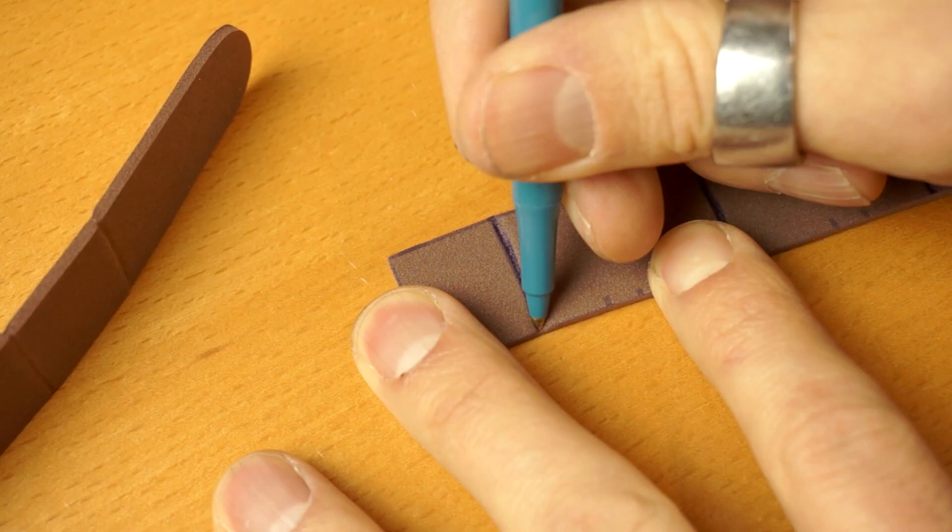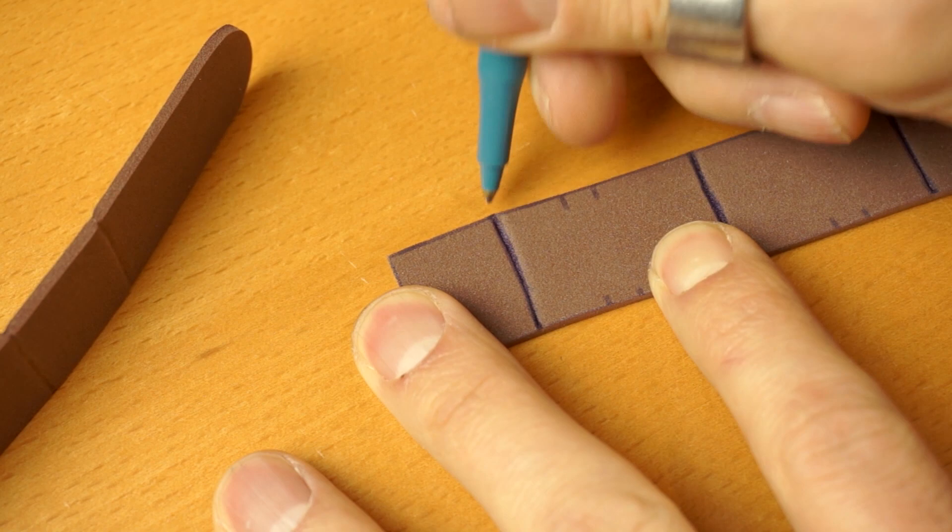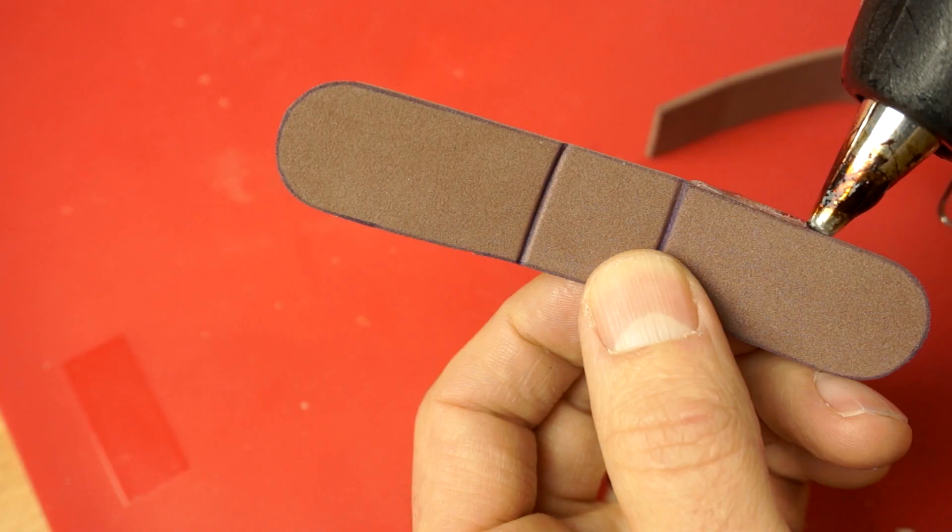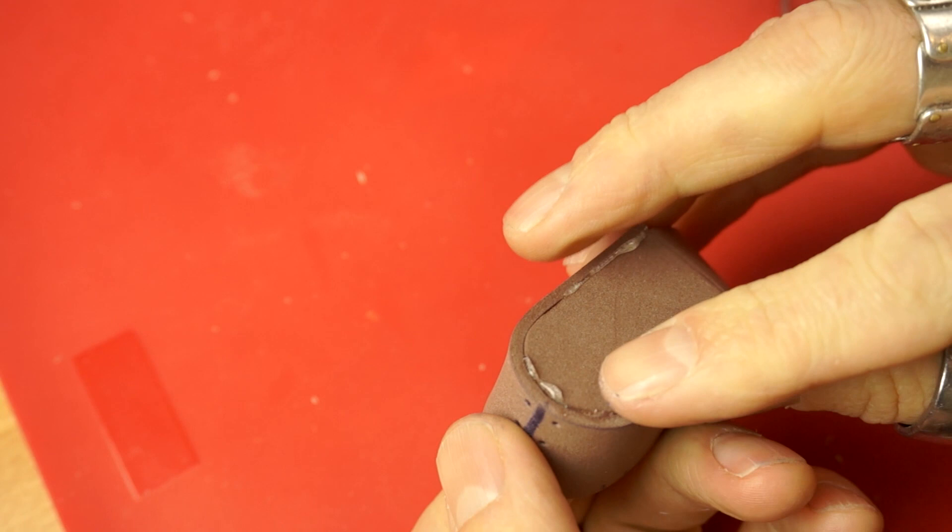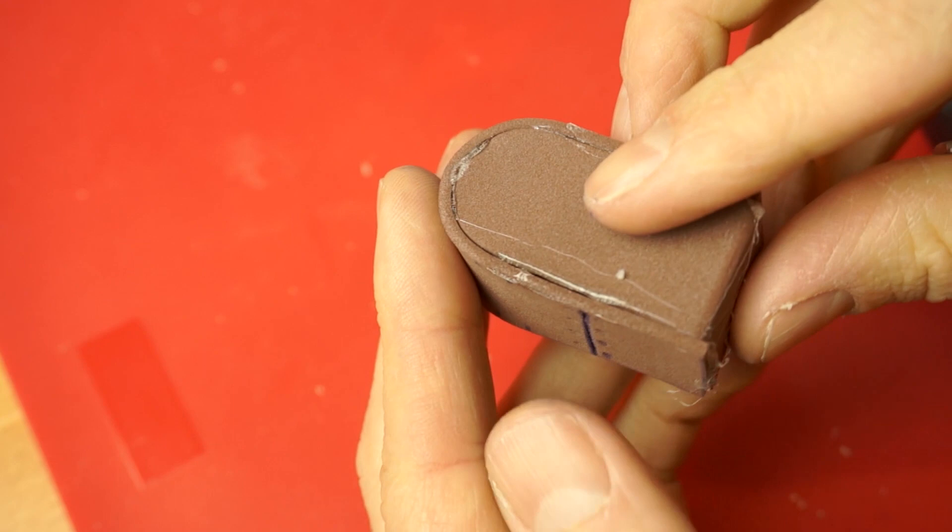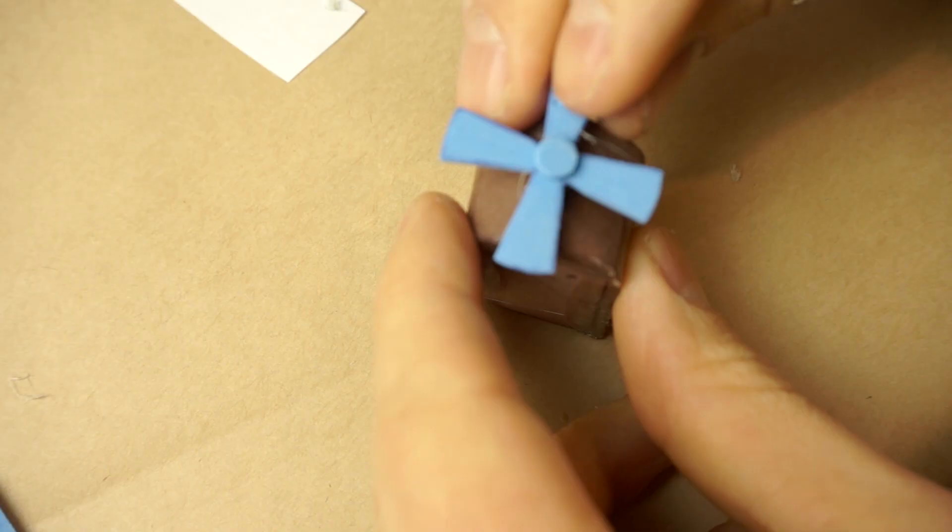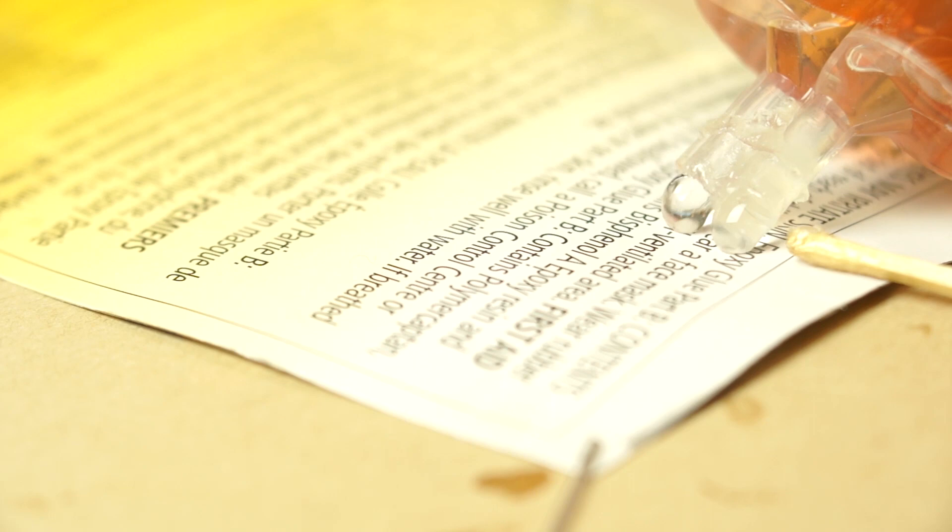Now it's time to work on the gondola section. Crease piece five along the lines and use your pen to create some seams and rivets on piece six. Line up a corner of piece six with a crease on piece five and glue the gondola together like this, and glue the little prop on the front.